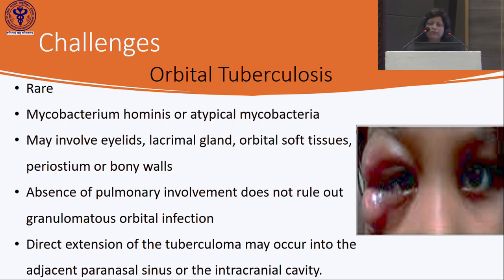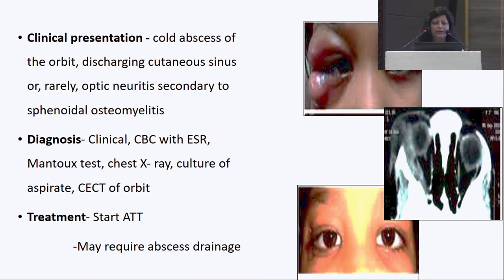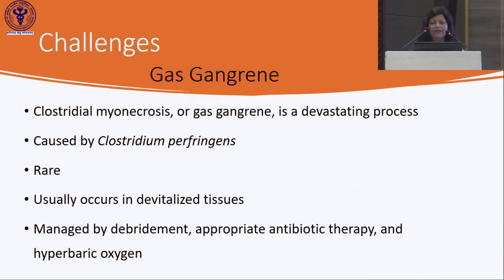Other rare problems include orbital tuberculosis due to Mycobacterium hominis or atypical mycobacteria, involving eyelids, lacrimal gland, orbital soft tissues, periosteum, or bony walls. Absence of pulmonary involvement does not rule out granulomatous orbital infection. Clinically it may present as a cold abscess, discharging cutaneous sinus, or rarely optic neuritis. Management includes ATT and may require abscess drainage. Gas gangrene from Clostridium perfringens is rare but devastating, managed by debridement, appropriate antibiotics, and hyperbaric oxygen.